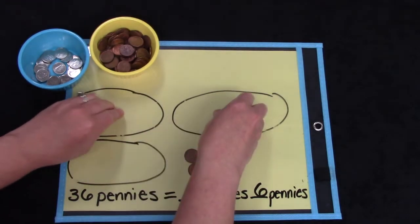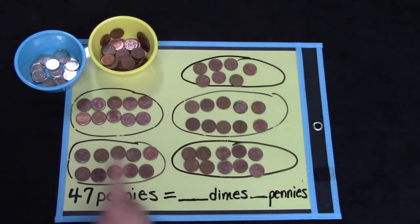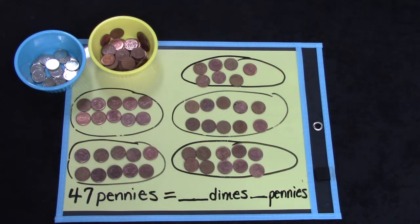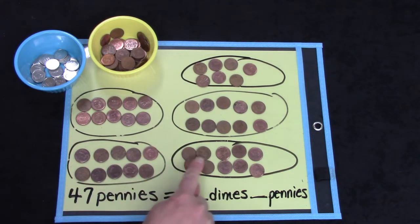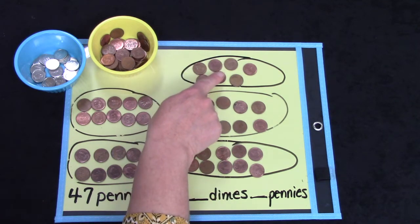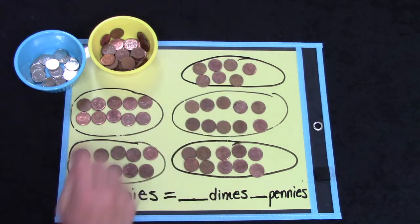Let's try this again. I have 47 pennies. 10, 20, 30, 40, 41, 42, 43, 44, 45, 46, and 47.